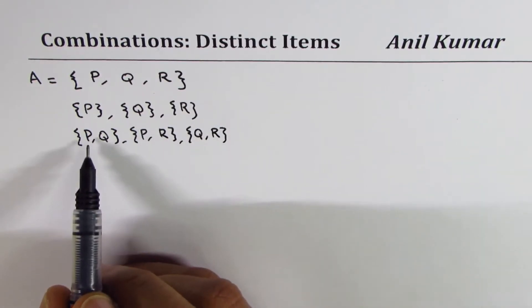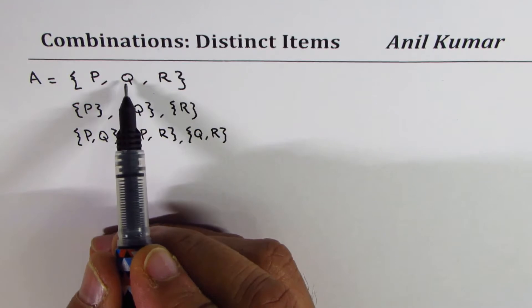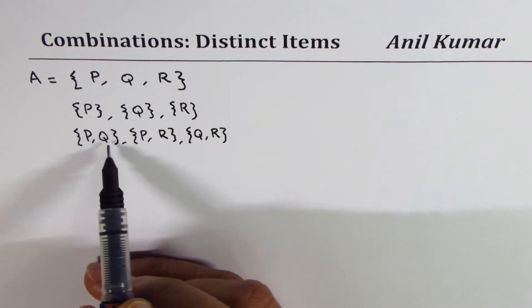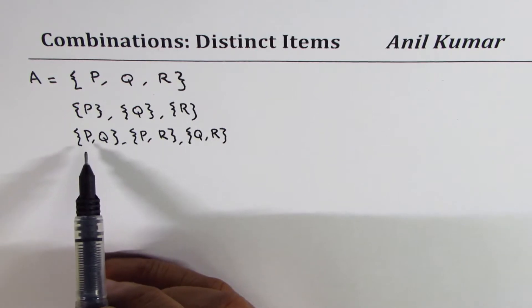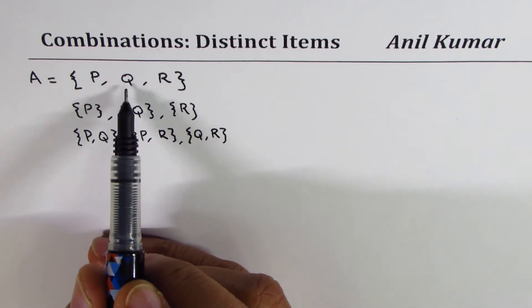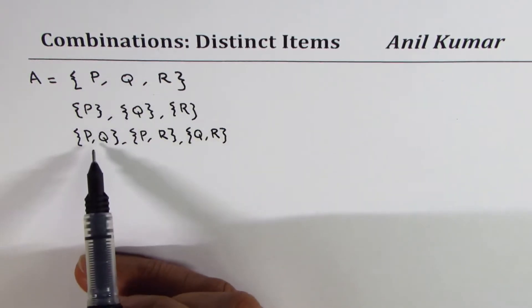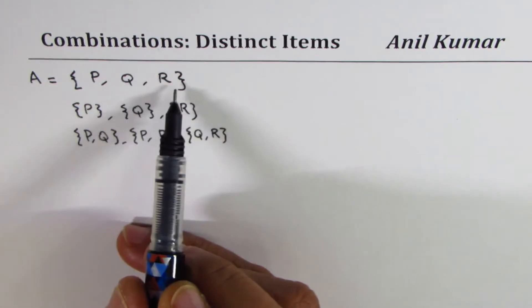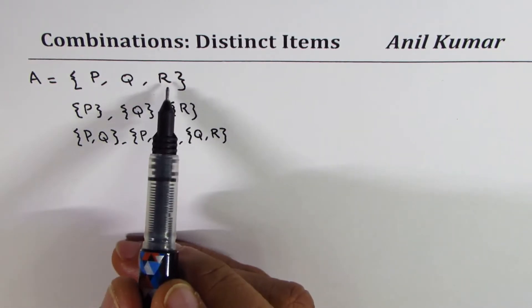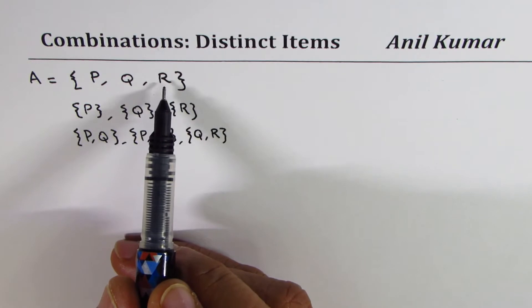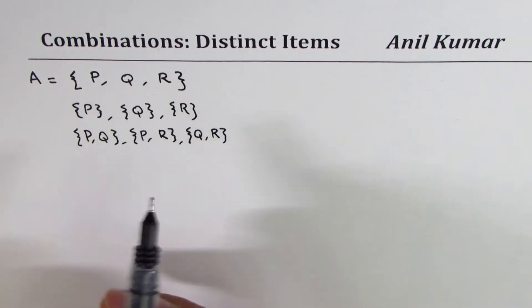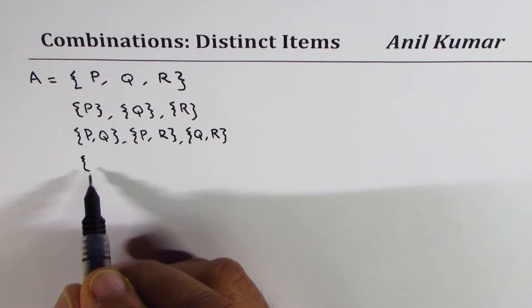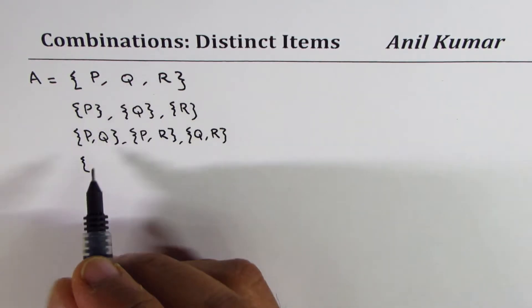Now if I say P with Q, then Q with P is same thing. When we are talking about combinations, PQ and QP is same thing. So if I begin with Q, I could have QP which I have taken care of, QR which I have written. If I want to start with R, I could write RP which I have considered. RQ has been considered.